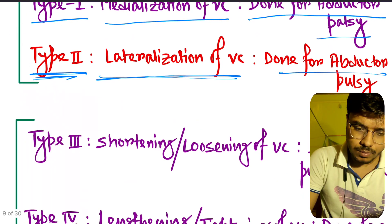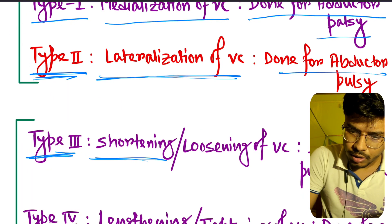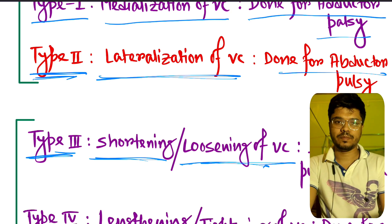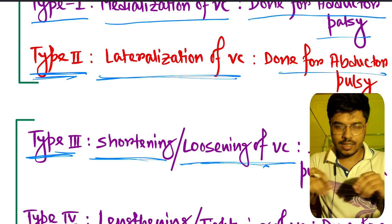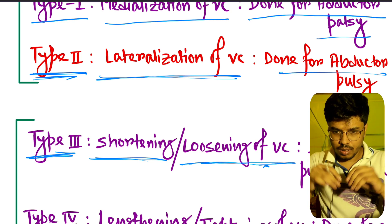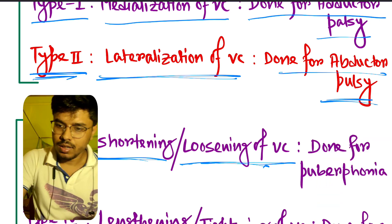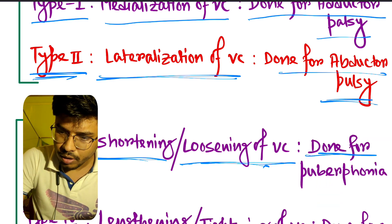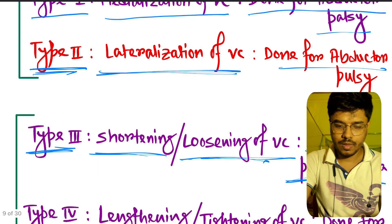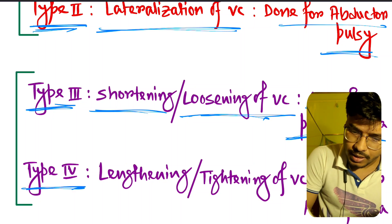Type 3 thyroplasty is the shortening or loosening of the vocal cord. The vocal cord is an elastic material — if we loosen the vocal cord it will be shortened. Type 3 thyroplasty is done for puberphonia.